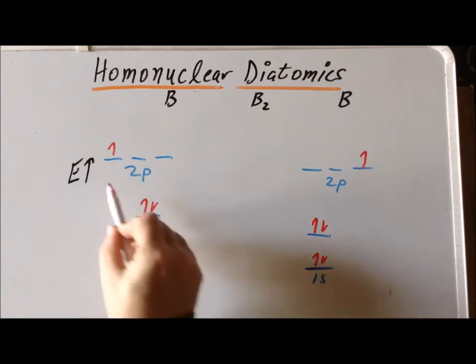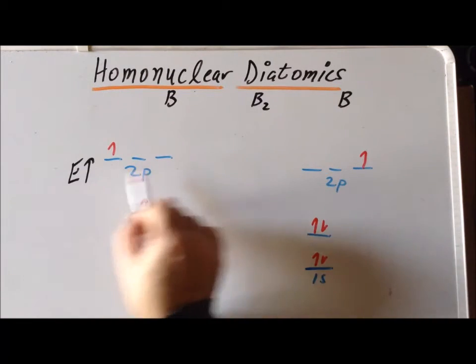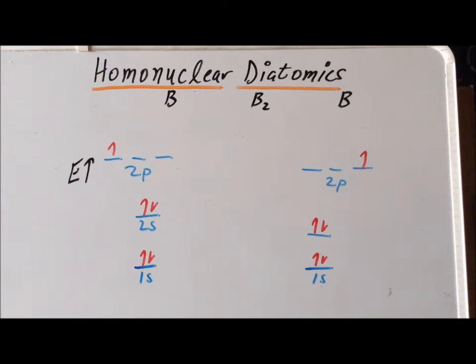The three 2p orbitals are drawn horizontally to show that in the absence of interactions, these three 2p orbitals are degenerate. Now we start looking for the combinations of atomic orbitals that will give us molecular orbitals.